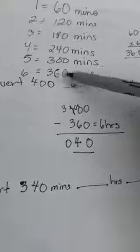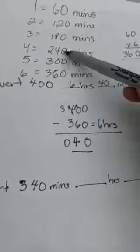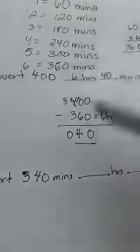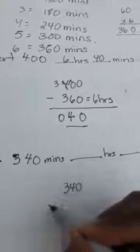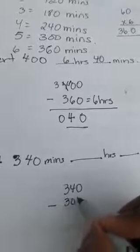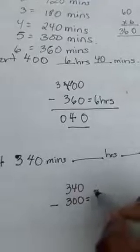If I use this, it's more than 340. If I use this, it's not the closest. This is the closest one. I'm going to write down 340 and subtract the 300 minutes, which I know equals 5 hours.